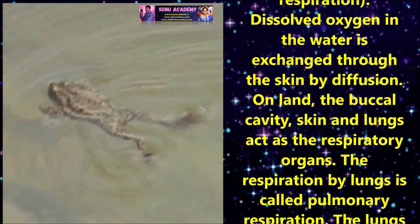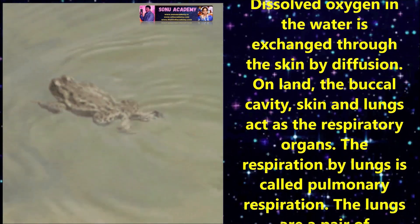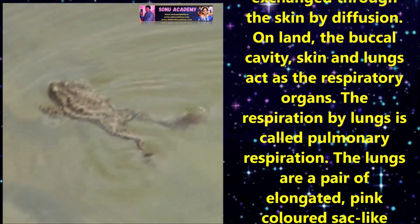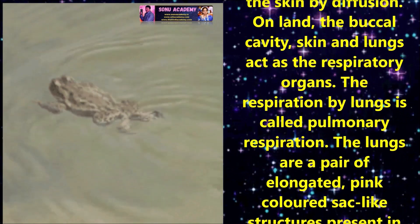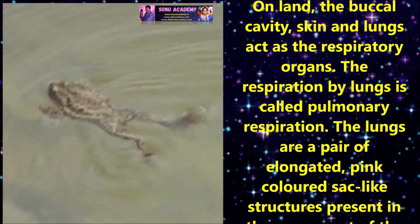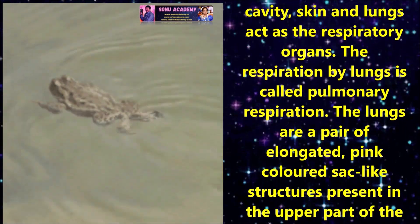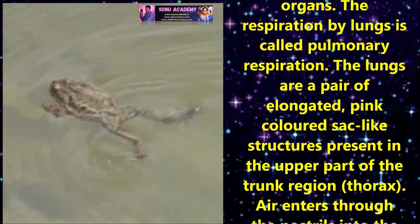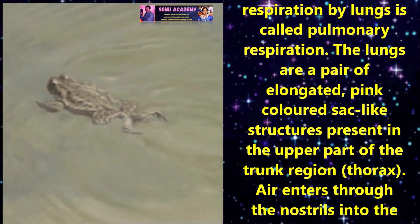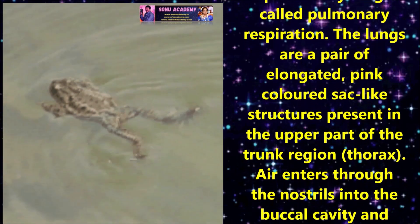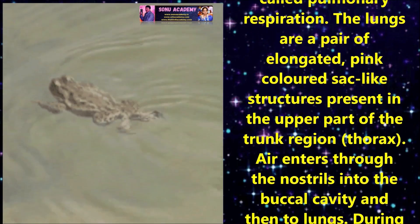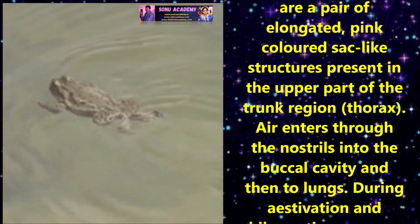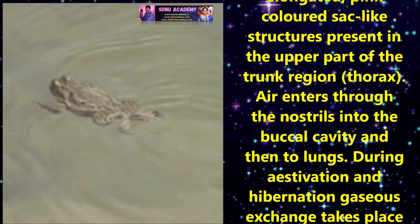Lungs are a pair of elongated, pink-colored, sac-like structures present in the upper part of the trunk region, the thorax. Air enters through the nostrils into the buccal cavity and then opens to the lungs. During estivation and hibernation, gaseous exchange takes place through the skin.